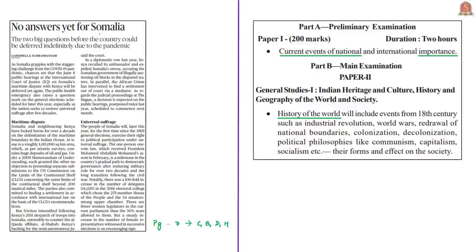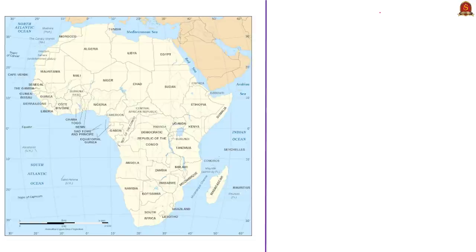This op-ed article discusses mainly about issues related to Somalia. In this context, we'll be discussing the geographical aspects of Somalia, then the brief history about Somalia, and also the recent dispute of Somalia and Kenya. The syllabus relevant for the analysis of this news article is highlighted here for your reference. Somalia is part of the Somalian Peninsula, which is also known as the Horn of Africa.